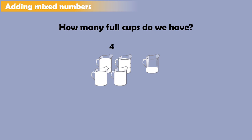As you can see, we have a total of 4 full cups of sugar. So, we write down 4. And we have 1 3rd of a cup here. So, we write plus 1 3rd. So, 4 and 1 3rd added together is our answer.